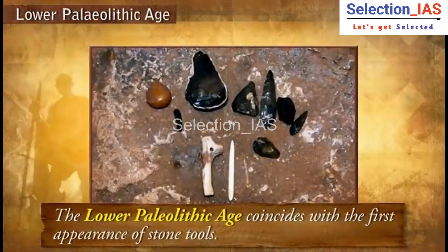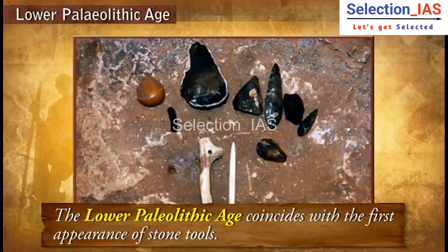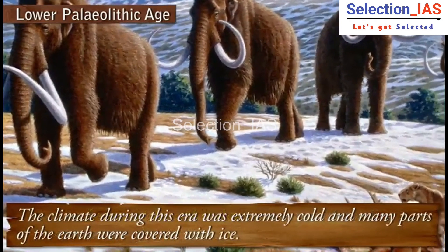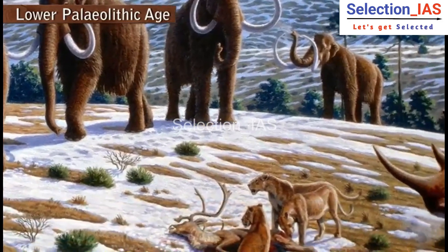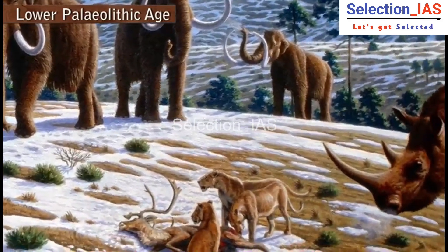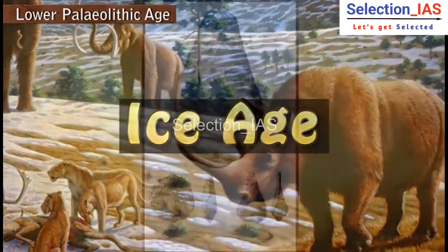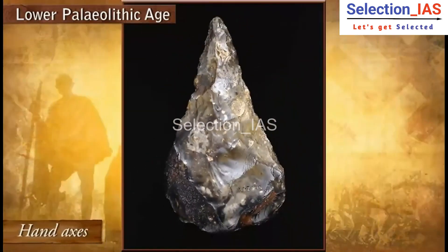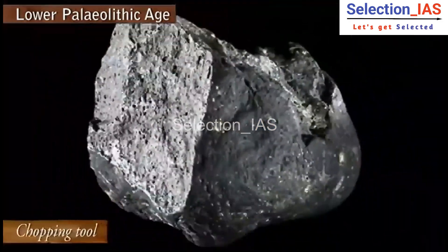The Lower Paleolithic Age coincides with the first appearance of stone tools. The climate during this era was extremely cold and many parts of the earth were covered with ice; hence, this period is also called the Ice Age. Tools used in the Lower Paleolithic Age were mainly hand axes, cleavers, and chopping tools.